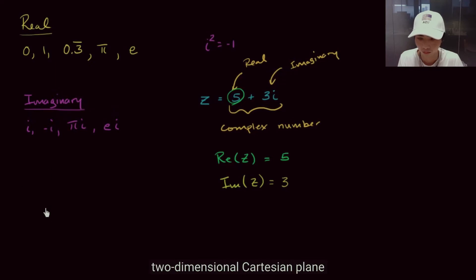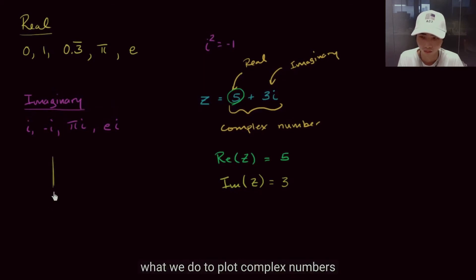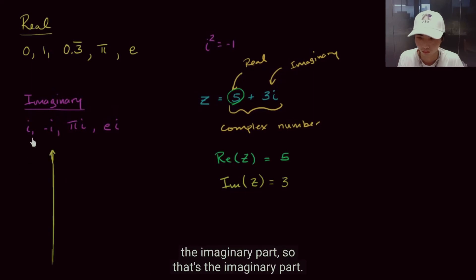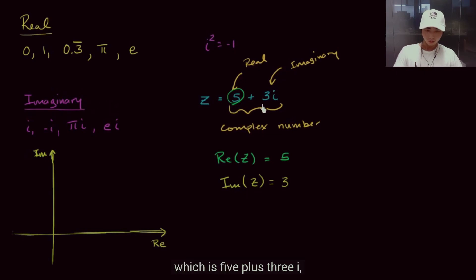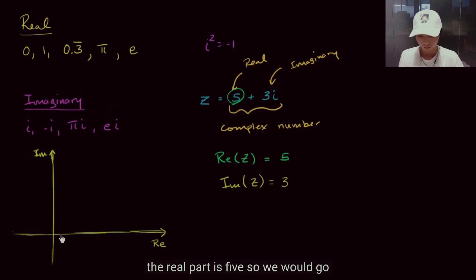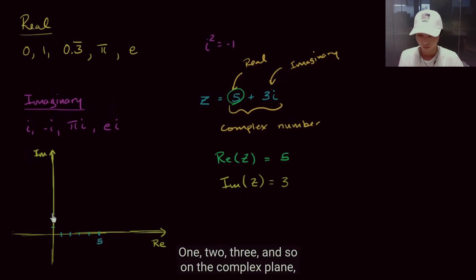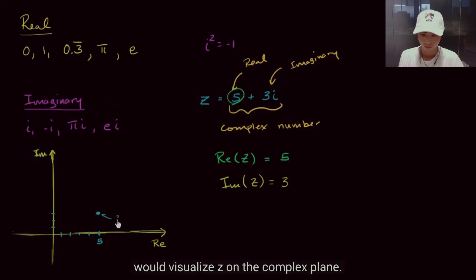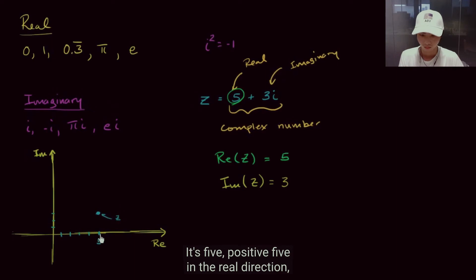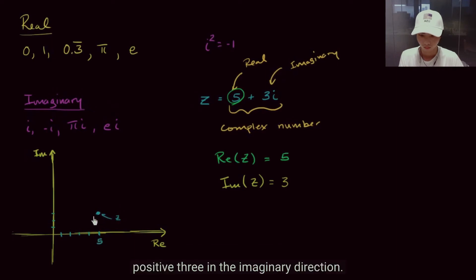We can visualize complex numbers in two dimensions on the complex plane. Instead of the traditional Cartesian plane, on the complex plane we plot the imaginary part on the vertical axis and the real part on the horizontal axis. For example, z = 5 + 3i: the real part is 5, so we go 5 in the horizontal direction, and the imaginary part is 3, so we go 3 in the vertical direction. That point on the complex plane represents z.